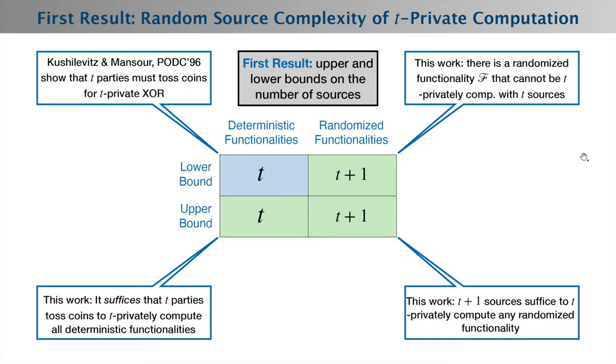We have several results. The first result is a complete characterization of the random source complexity of t-private computation—a characterization of the number of parties who can toss random coins.